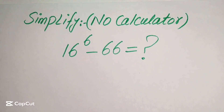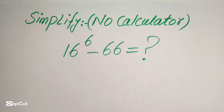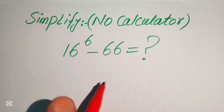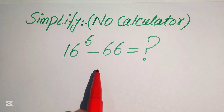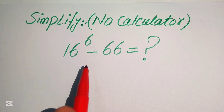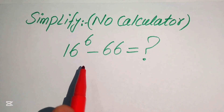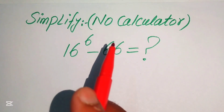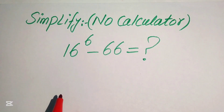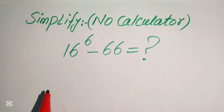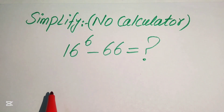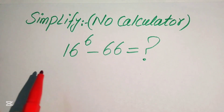Hello everyone. How to simplify this nice algebraic expression: if we have 16 to the power of 6 minus 66, and we write this into the simplified form. Remember, a calculator is not allowed in this problem — we will show all of the working here.